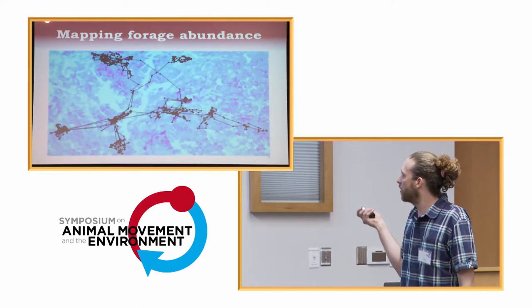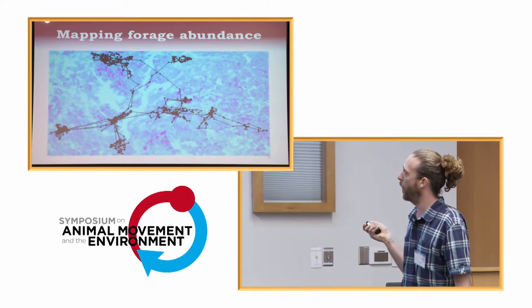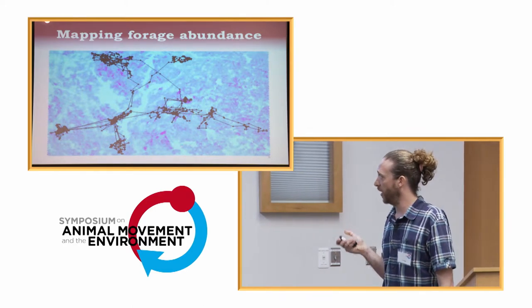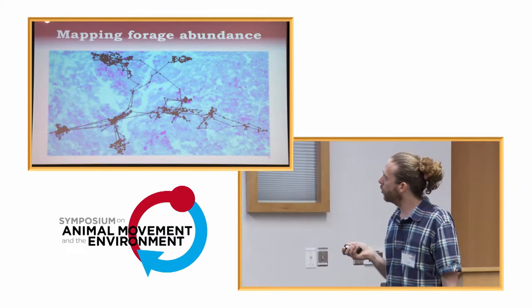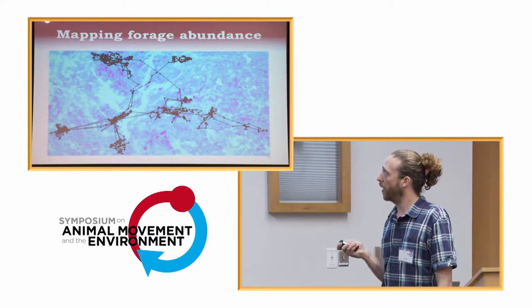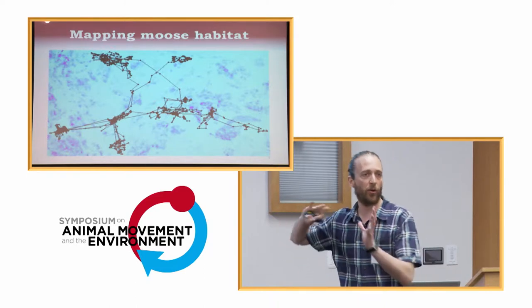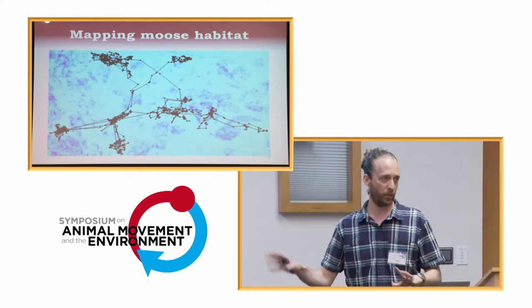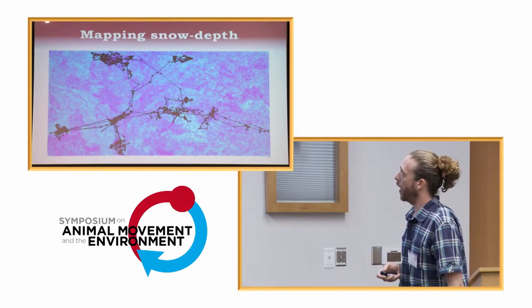And again, this is the same caribou that I showed you before, the same trajectory over a map of forage abundance. Again, the purple is the high forage abundance spots, average across the year. And we repeat this exercise for moose habitat. In this case, we don't have moose densities per se, but we have the RSFs for the moose based on aerial surveys. And snow depth.